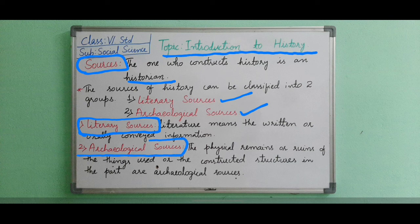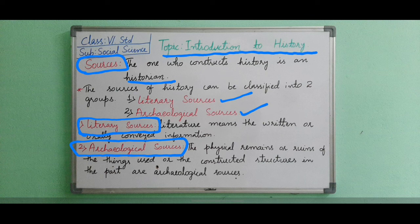Archaeological sources refer to the physical remains or ruins of things used or constructed structures from the past. Monuments, temples, and similar remains are considered archaeological sources. The remains buried in the earth are removed through excavation — meaning the digging of the earth using scientific methods to find objects buried underground. Historical evidences include coins, inscriptions, monuments, pieces of forts, and other artifacts.